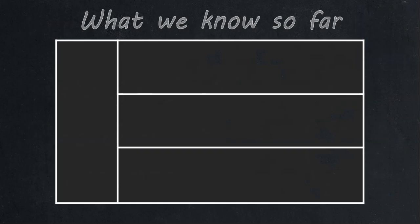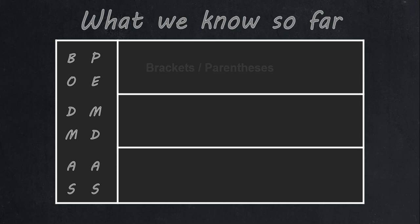Let's first think about what we know so far. Some of you might remember that Delphi follows what we call BODMAS. In some countries they don't use the word BODMAS — they use PEMDAS. The B and the P are the same thing: brackets or parentheses. Whenever you have brackets or parentheses, you must do things in that particular order — those things go first, from top to bottom.